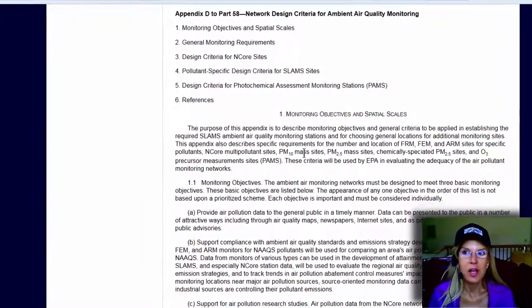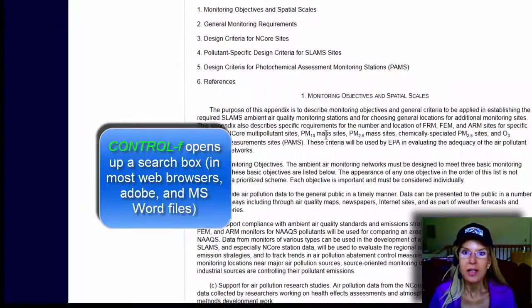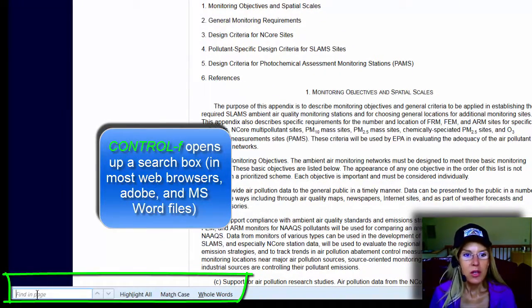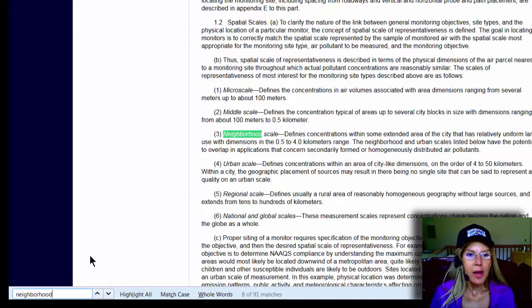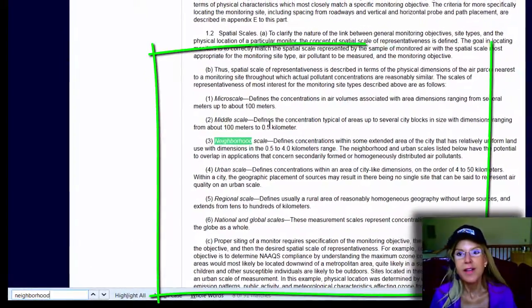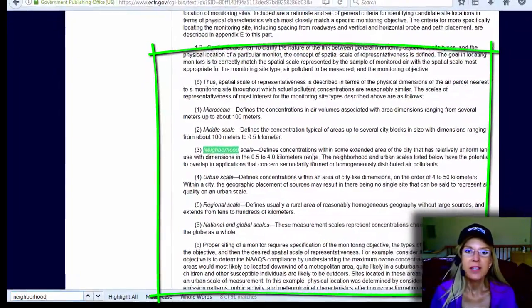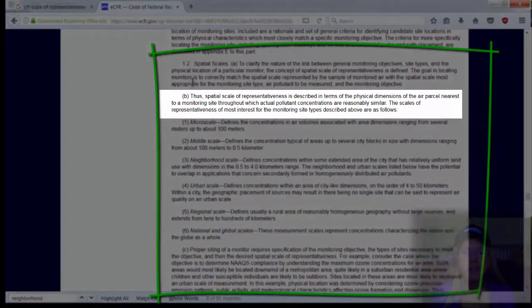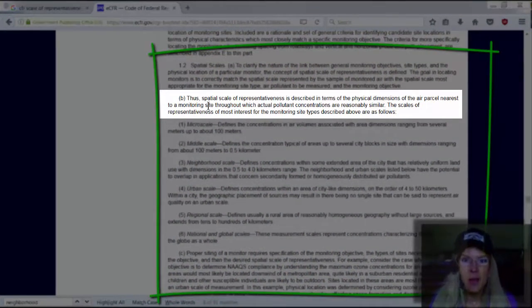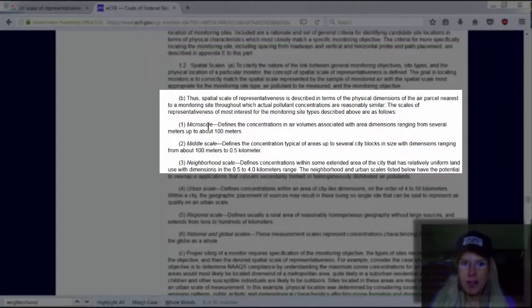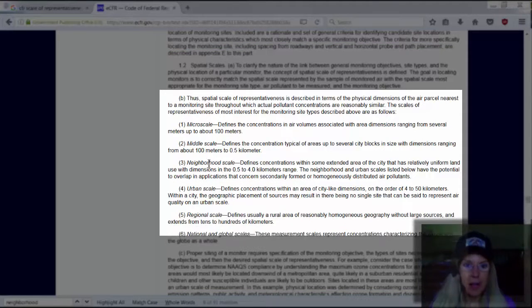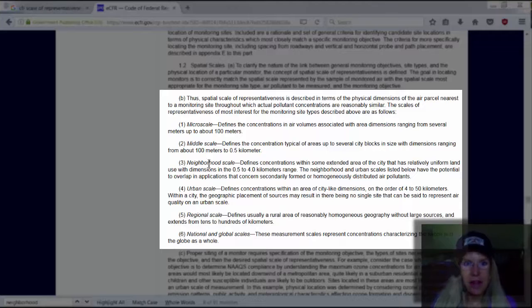And now when I want to find something and I'm in a web page, I click Control F and that opens up this little Find It box. And I click in Neighborhood because I know that probably we're going to be looking at neighborhood scale. And that finds it quickly. And now we see these different definitions of spatial scales. So the definition of the spatial scale of representativeness is that it is representative of a reasonably similar, in other words, homogenous area, where you've got these different definitions including middle scale and neighborhood scale.